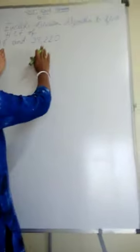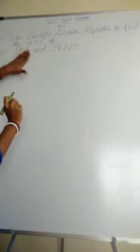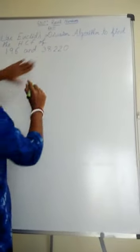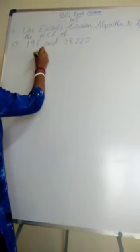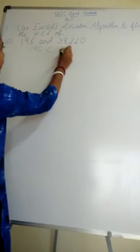First step, first step is between these, which is the smaller number, which is the greater number. 196 is the smaller number and 38,220 is the greater number. So, 196 is smaller than 38,220.